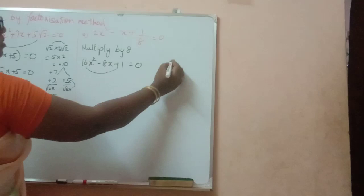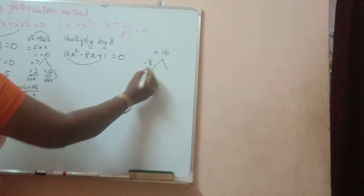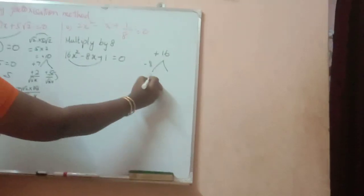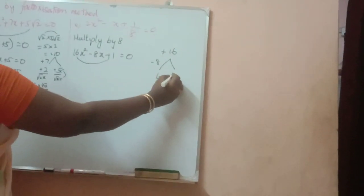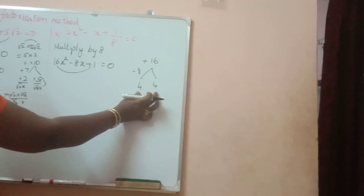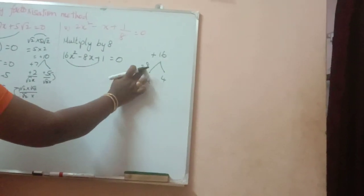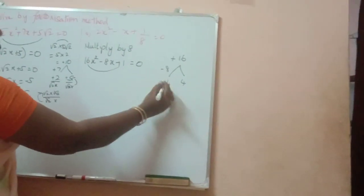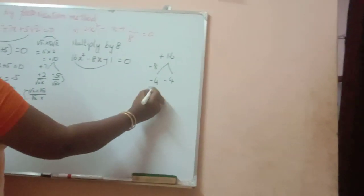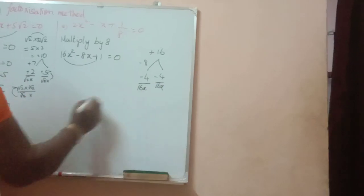Coefficient of x square and constant: plus 16. We need minus 8. Coefficient of x is minus 8. 4 fours are 16. The factors of 16: 4 fours are 16. If you add 4 and 4, you will get 8. If you add and get this number, give this sign to both the numbers. Then here 16x square, divided by 16x.